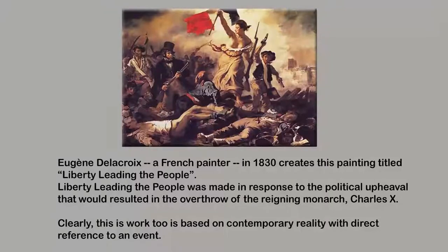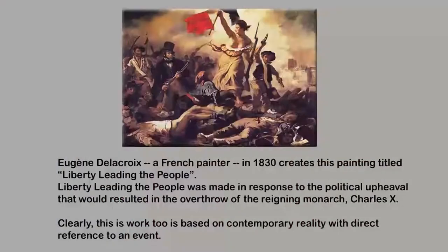Now let us look at another painting by a French painter called Delacroix — a painting he painted in 1830 having the title 'Liberty Leading the People.' Once again the title immediately suggests a reference to the French Revolution. This painting was made in response to the political uprising that resulted in the overthrow of the reigning monarch Charles X. Like the previous work by Goya, this work by Delacroix is based on contemporary reality, with direct reference to an event very close to their time — in fact, it happened during their time.